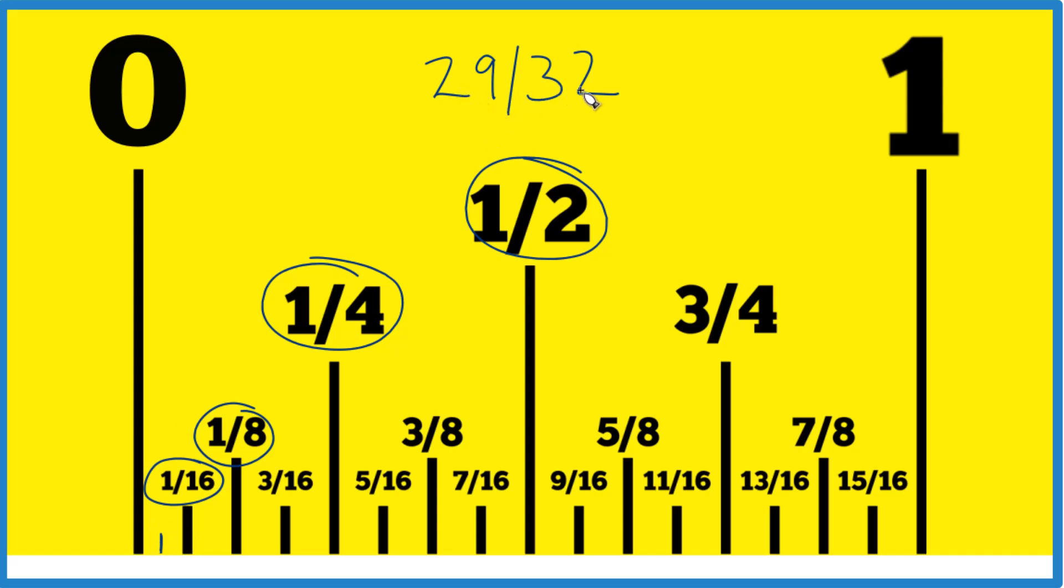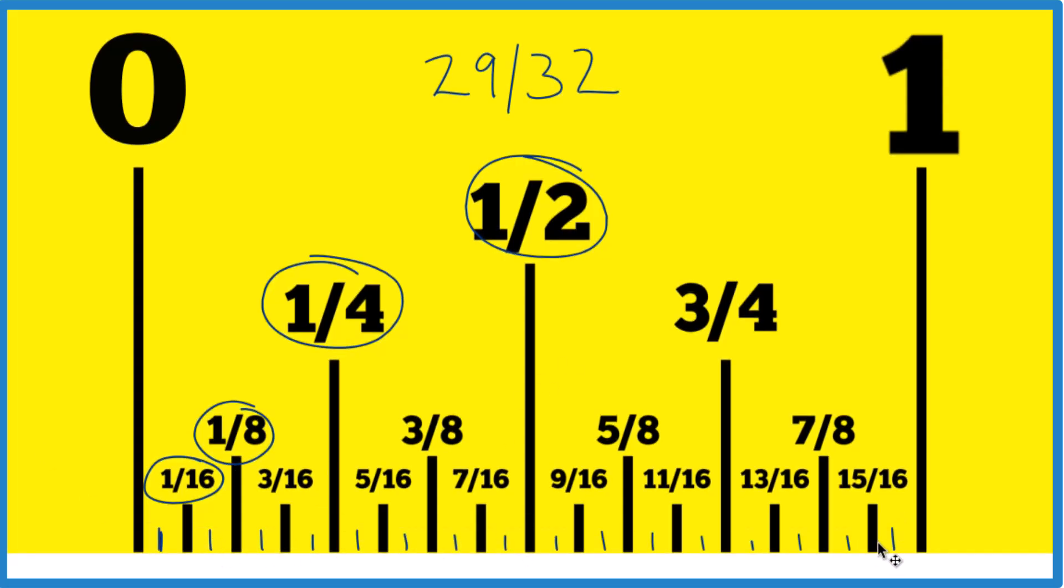We have 29/32nds. So if we divide all of these up like this, there are 32 pieces. Each one is 1/32nd, and we want 29 of them.